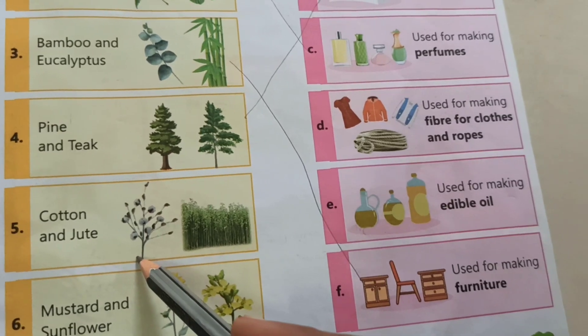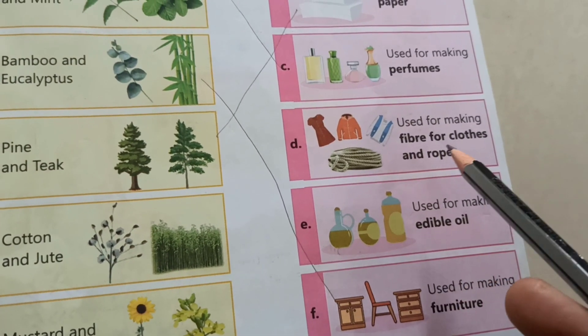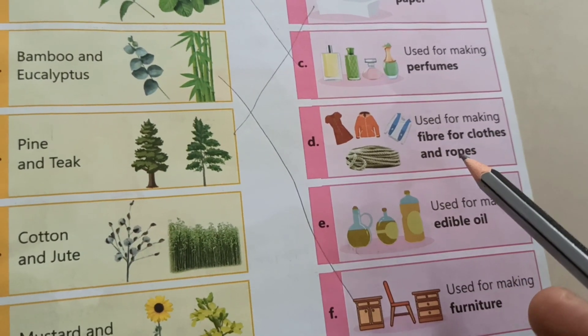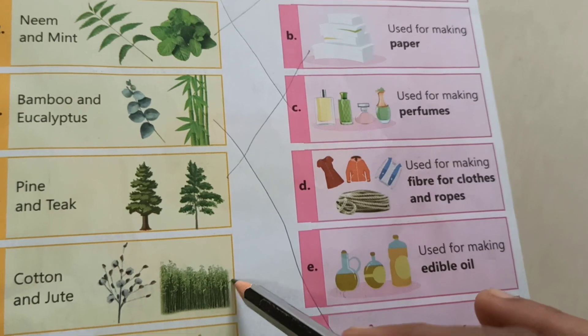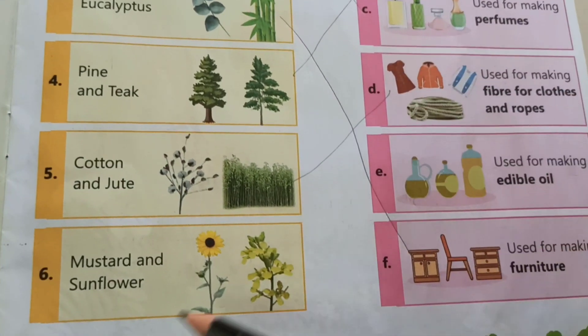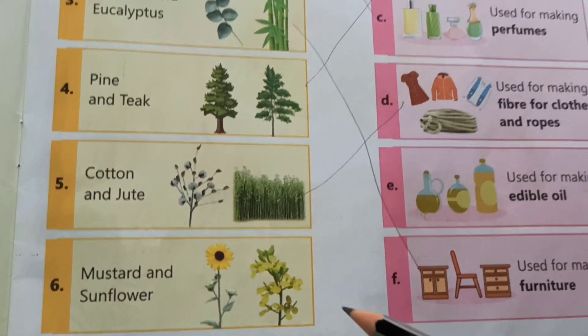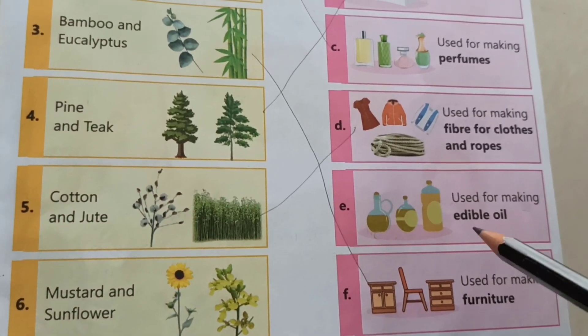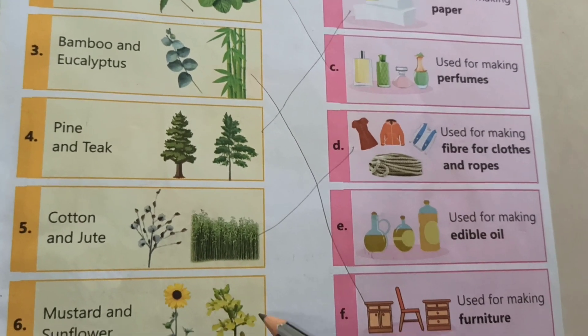And cotton and jute — fiber for cloths and ropes, so match here. And mustard and sunflower — edible oil.